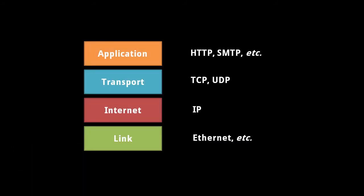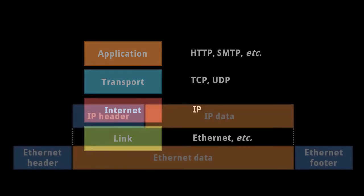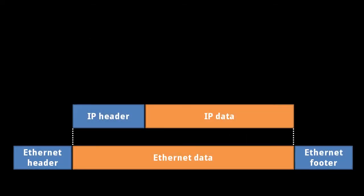That's where the internet protocol of the internet layer comes in. IP packets travel within each network via the link layer, such as in Ethernet packets, but IP packets also get passed from network to network. Aside from the data payload itself, each IP packet contains a header which describes the packet, such as the source and destination IP addresses.